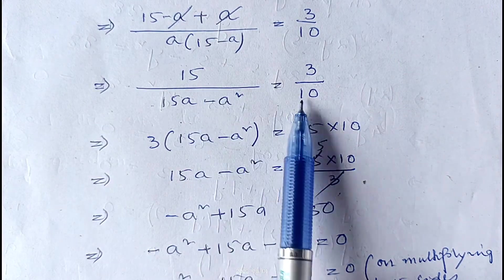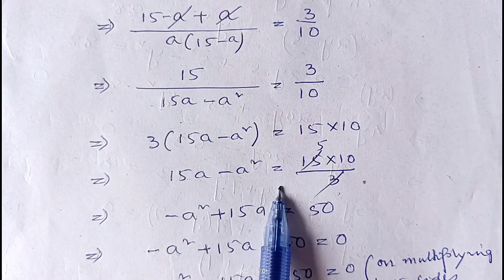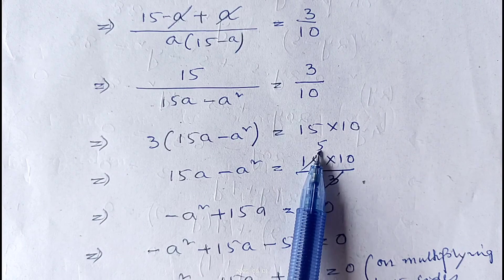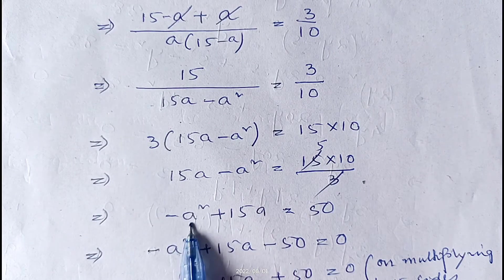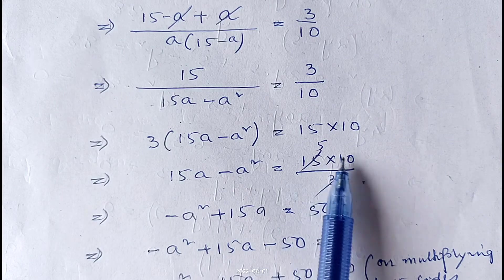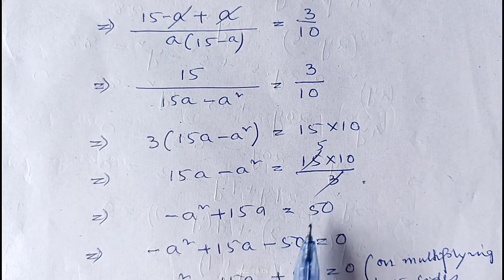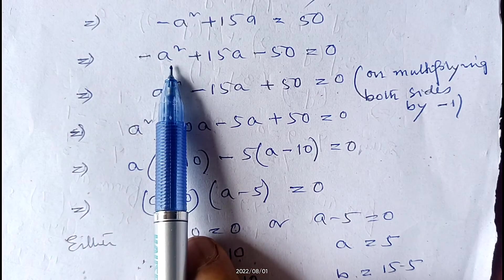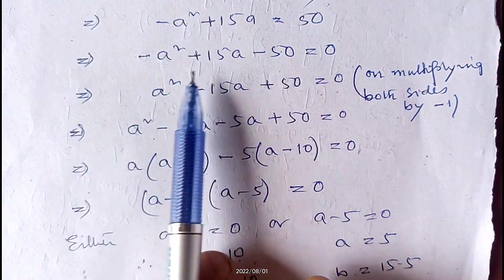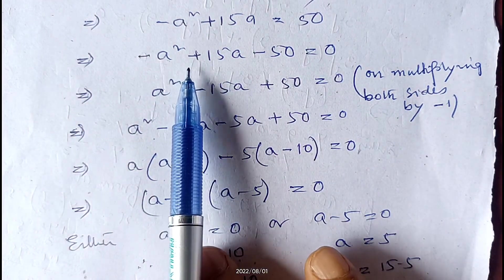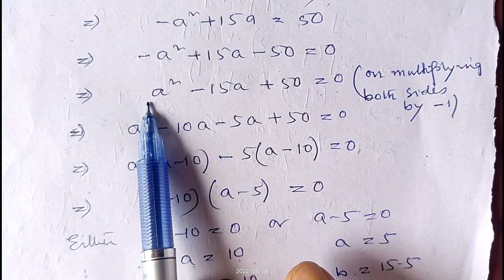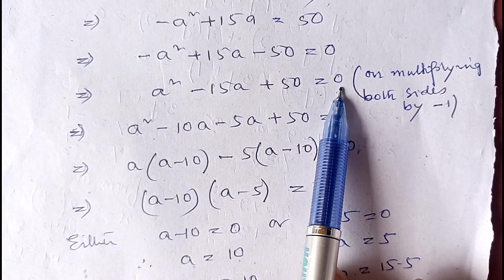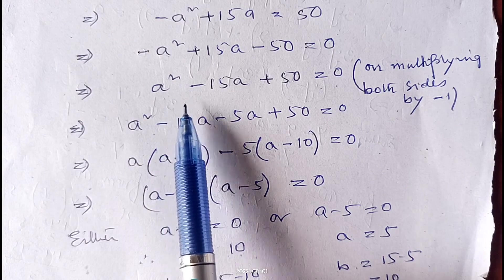Now cross multiplying: 3 × (15a − a²) = 15 × 10, so 15a − a² = 150/3. Since 3 and 15 cancel, it becomes 5 × 10 = 50. So we have −a² + 15a = 50. Transferring 50 to the other side: −a² + 15a − 50 = 0. Since the coefficient of a² is negative, we multiply both sides by −1.